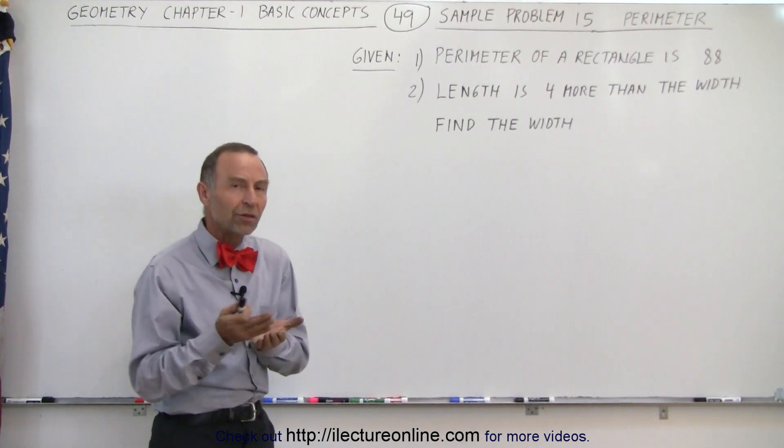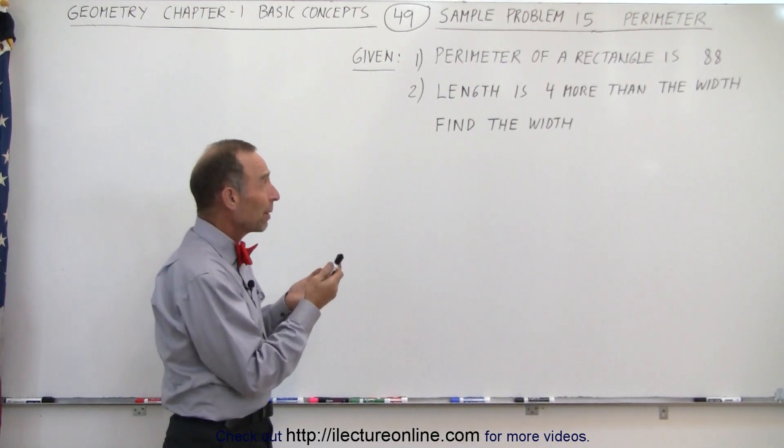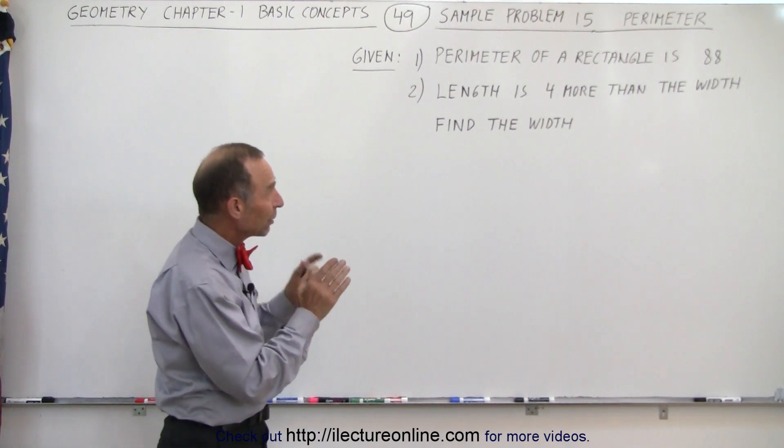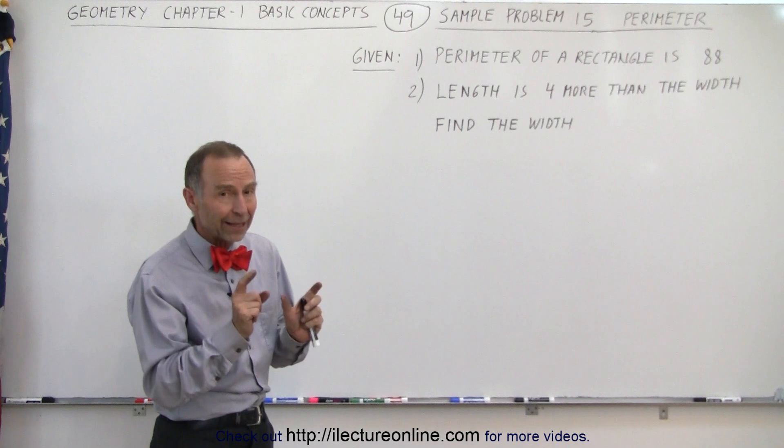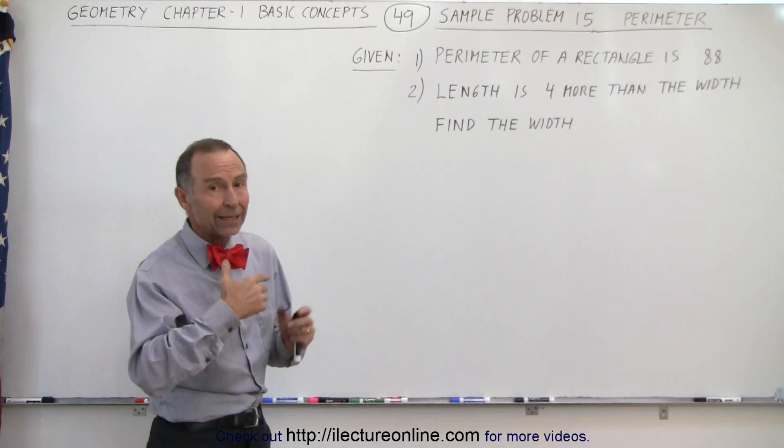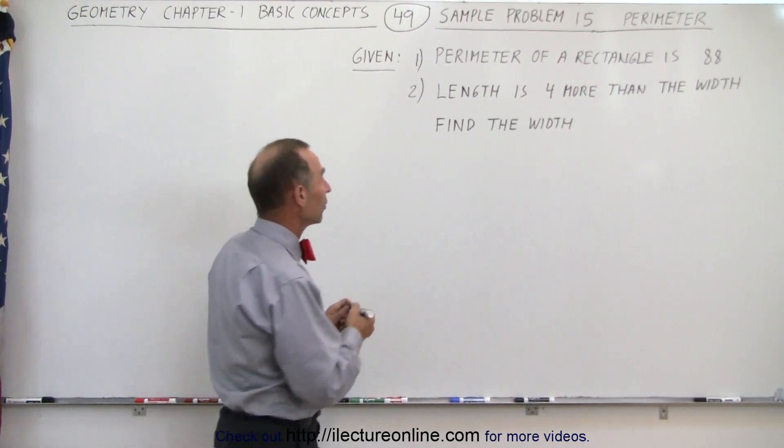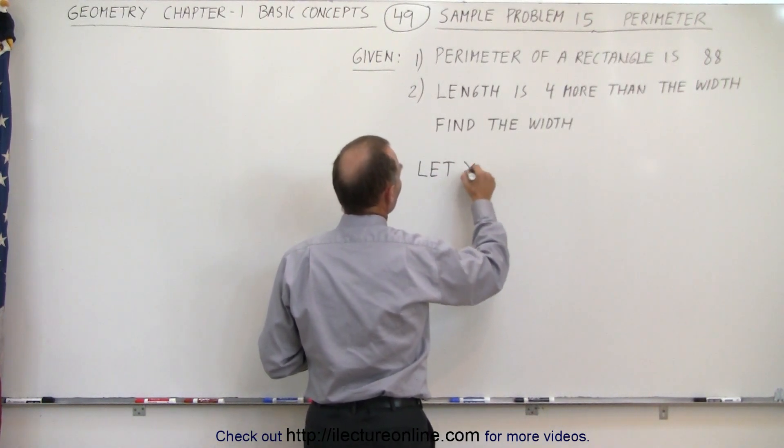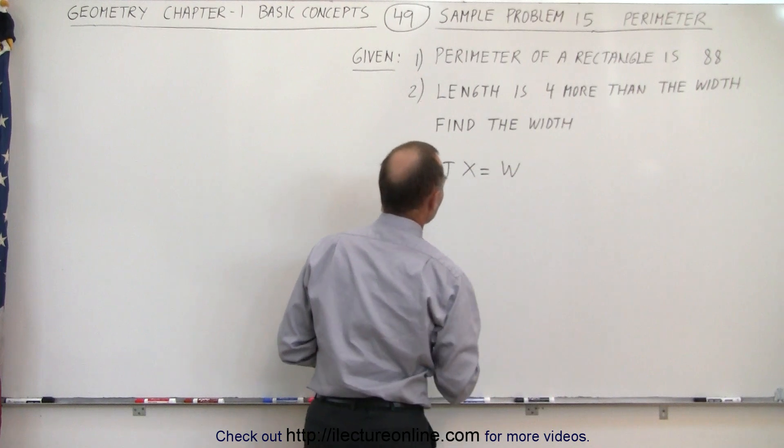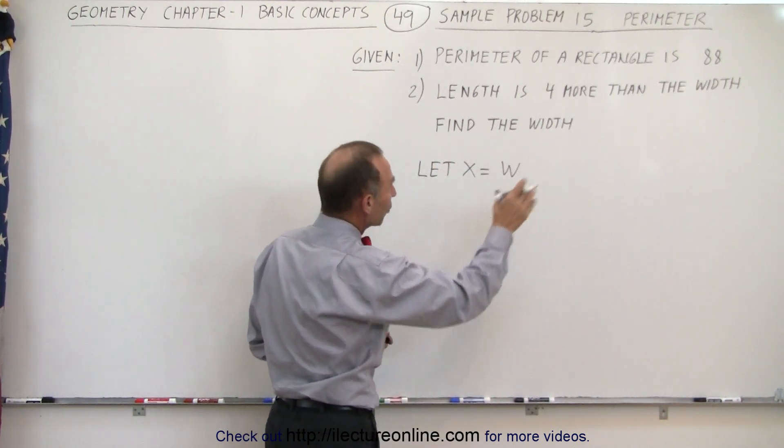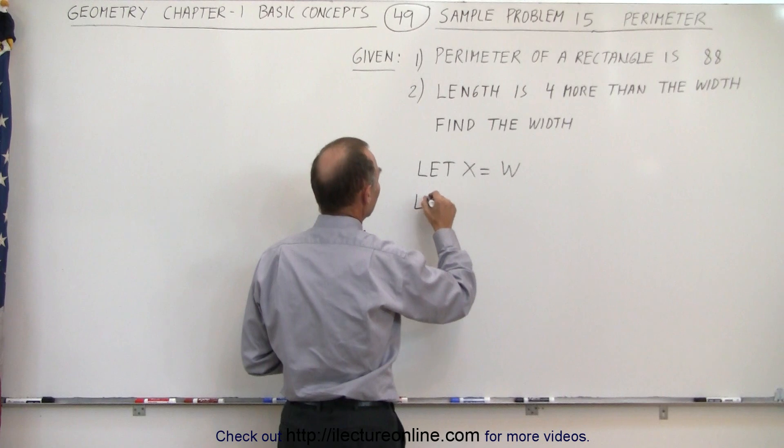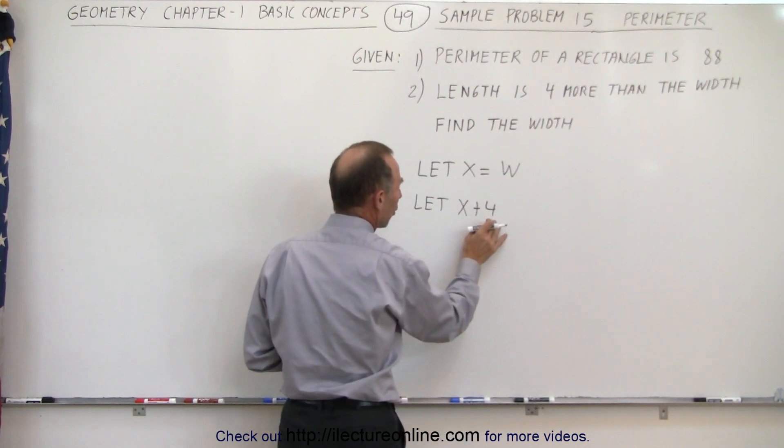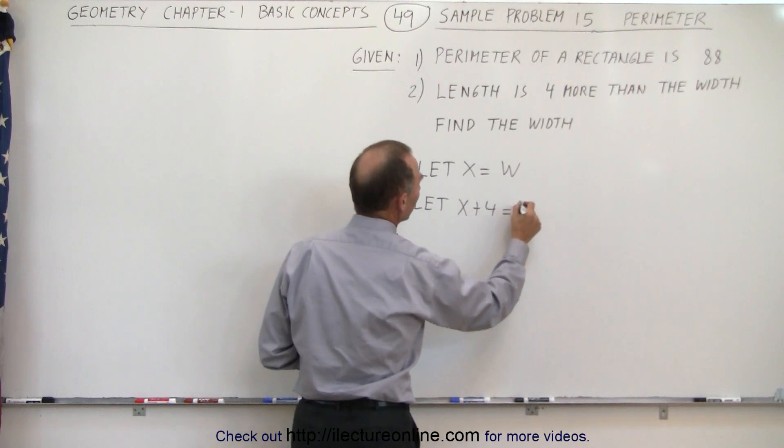So what we want to do is introduce a variable. Normally we represent the length by L and the width by W, but we're going to take the shortest of the two, which is the width, and set x equal to the measure of the width. So let x equal the width. Now since the length is 4 more than the width, we can say let x plus 4, 4 more than the width, equal the length.